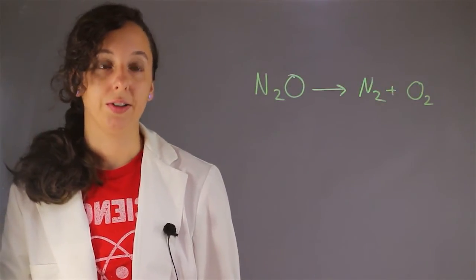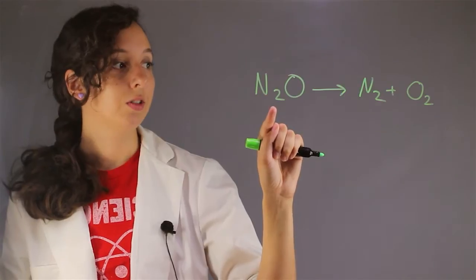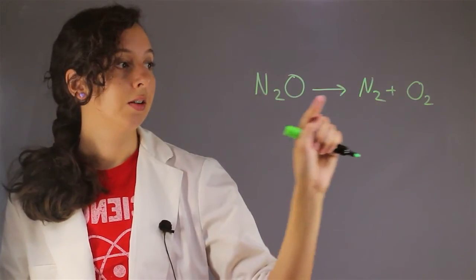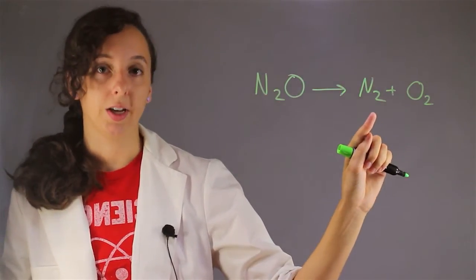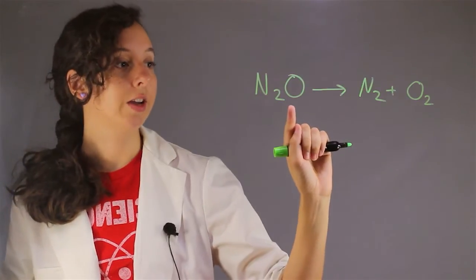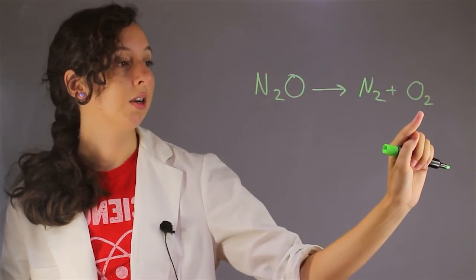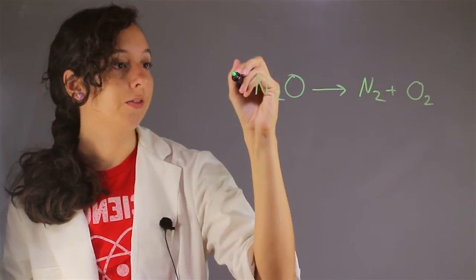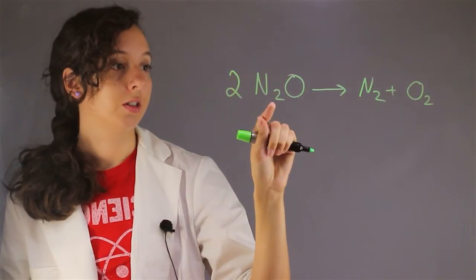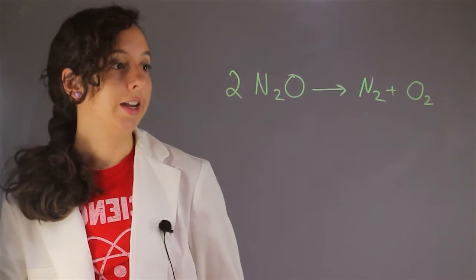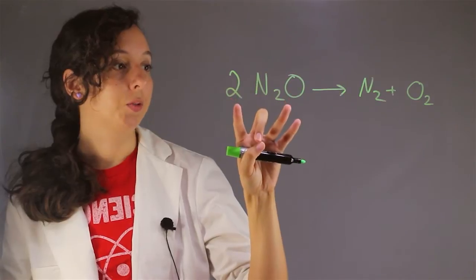So, if we start balancing by looking at our number of nitrogens, we see we have two here and two here. That looks pretty good, but if we get to oxygen, we have one here and two here. So, we need to add a coefficient of two to dinitrogen monoxide, and now we've created a balance with our oxygens.